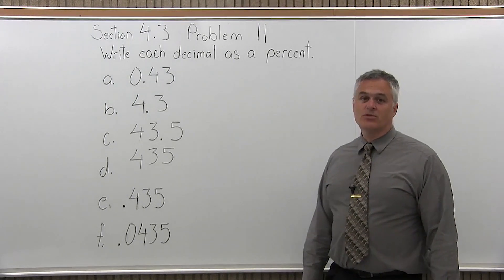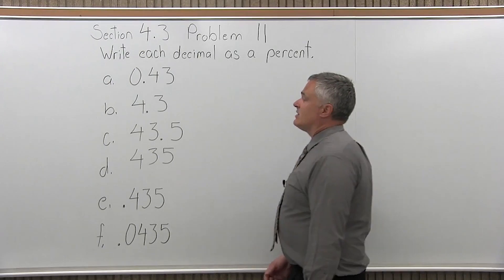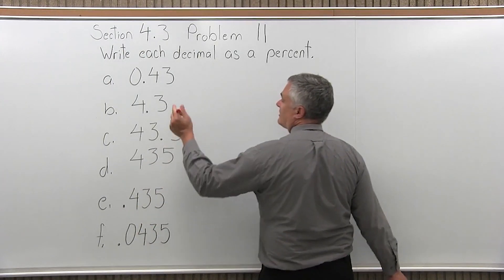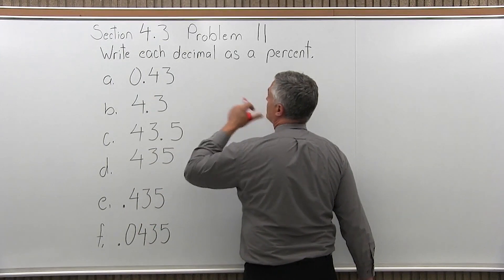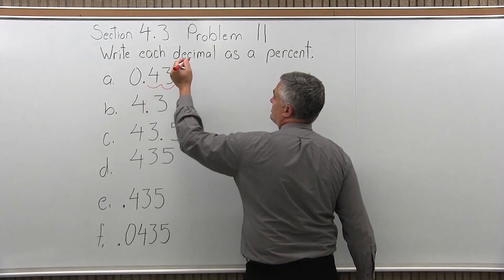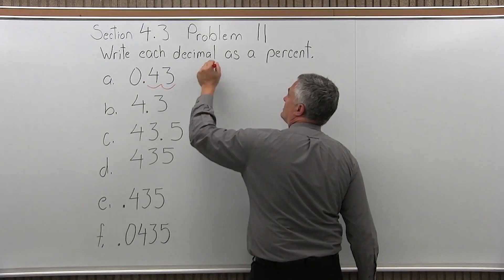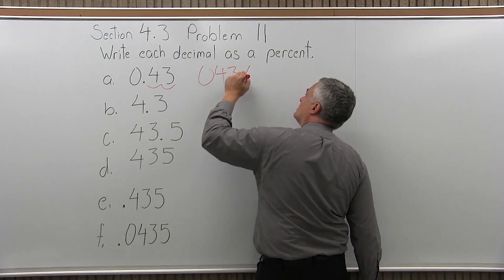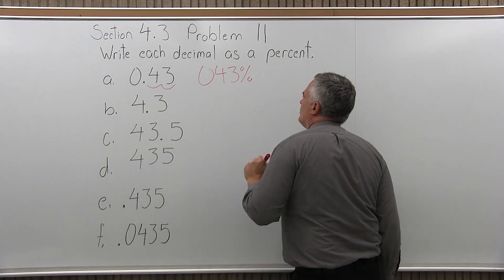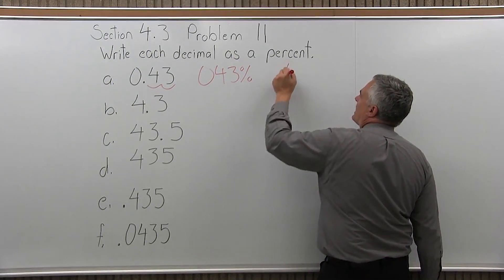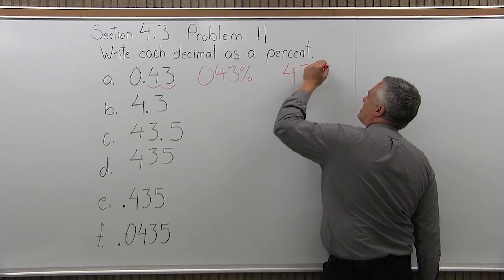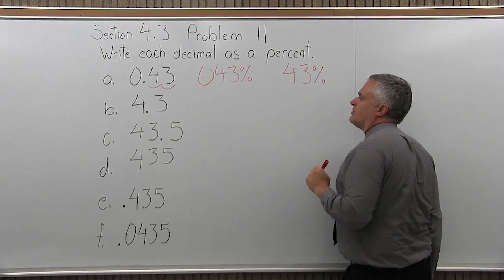The first one is 0.43. To make it a percent, take the decimal point where it's written, between the zero and the four, and move it two positions to the right. It becomes 0.43%, but nobody would write that far left zero, so you would just say it's 43%.